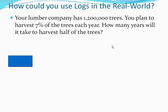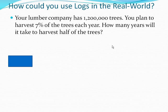This is a lumber company and they have 1.2 million trees. Your plan is to harvest, so think about what the word harvest means in terms of growth or decay. Your plan is to harvest 7% of the trees each year, and we need to know how many years will it take until you harvest half of them.